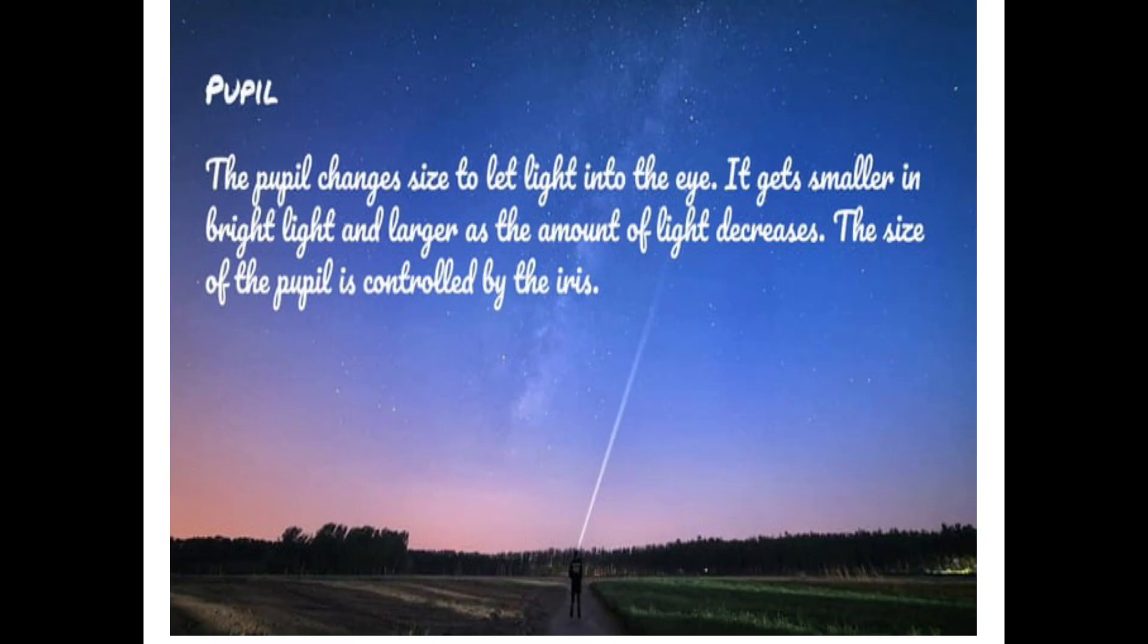Pupil. The pupil changes size to let light into the eye. It acts as a curtain to our eyes. It gets smaller in bright light and larger as the amount of light decreases. The size of pupil is controlled by the iris.